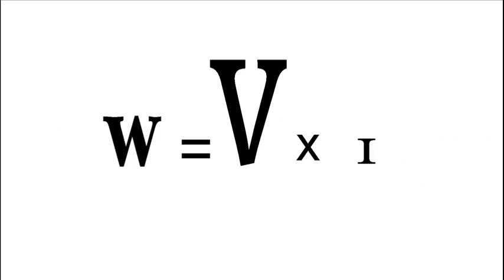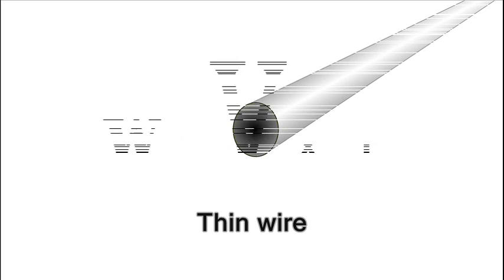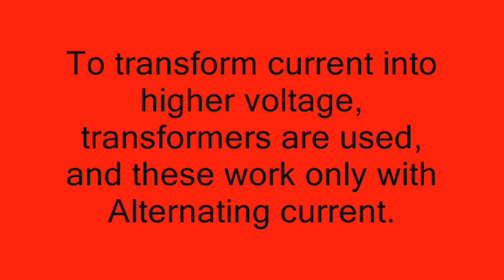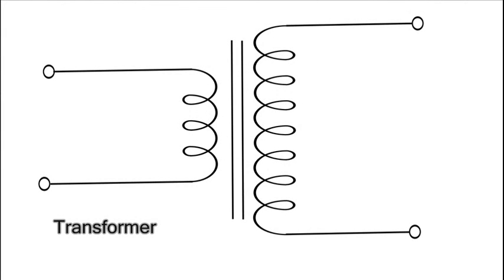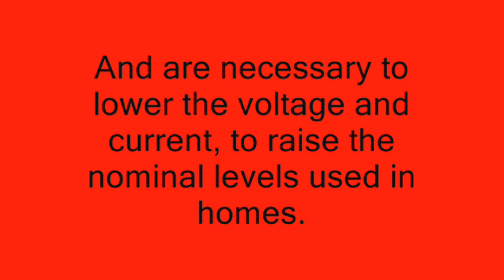So high voltages are used to transmit from the generating plants through relatively thin wires. To transform current into higher voltage, transformers are used, and these work only with alternating current and are necessary to lower the voltage and current to the nominal levels used in homes.